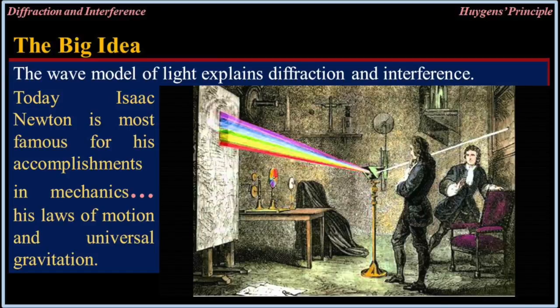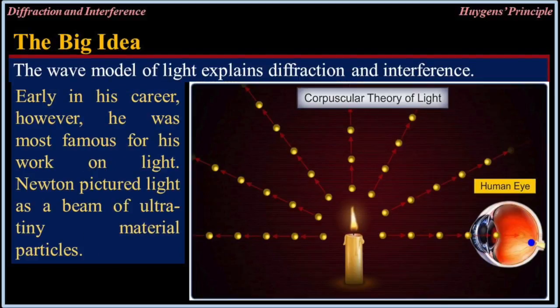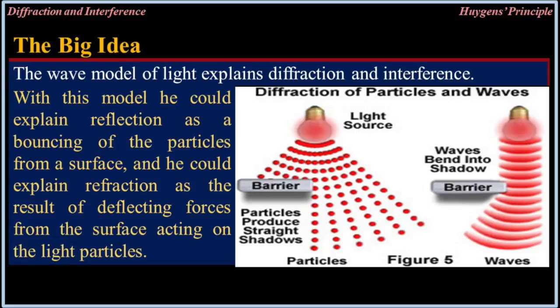Today, Isaac Newton is most famous for his accomplishments in mechanics — his laws of motion and universal gravitation. Early in his career, however, he was famous for his work on light. Newton pictured light as a beam of ultra-tiny material particles. With this model, he could explain reflection as a bouncing of the particles from the surface, and he could explain refraction as a result of deflecting forces from the surface acting on the light particles.